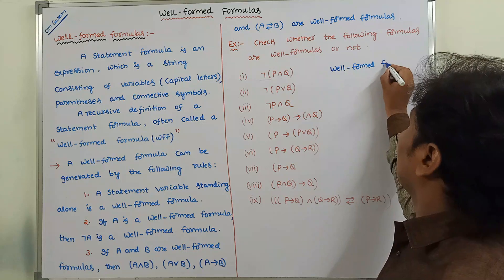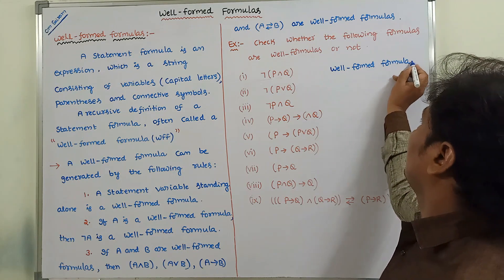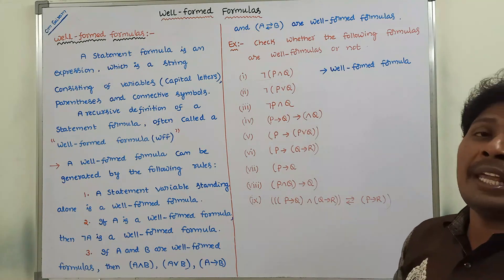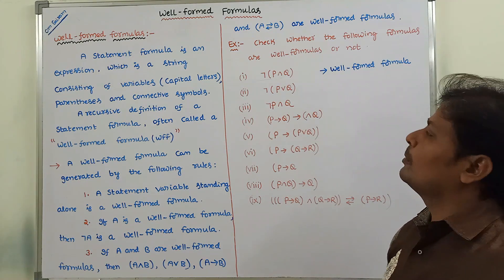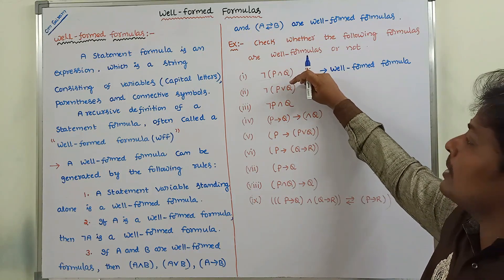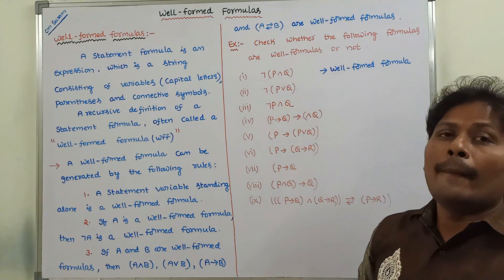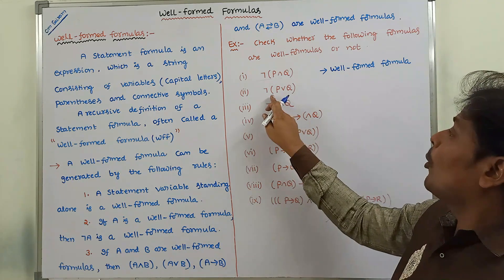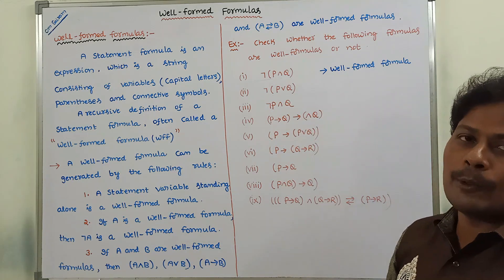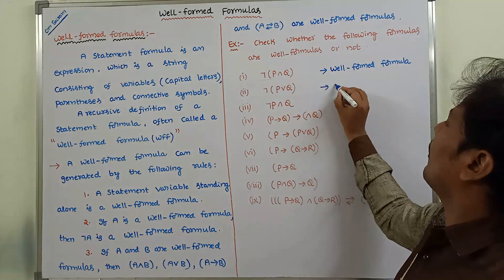Consider the second example: negation of (P or Q). Here P and Q are two statement variables. Negation and 'or' are the connectives, and open and close parentheses are also there. So it is a well-formed formula.